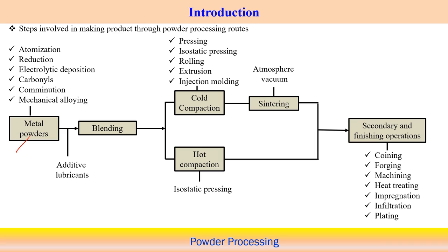Once the metal powder is produced, we can add an additive lubricant along with the powder, and then blending is the next step. After blending with the required lubricants, the powder can be compacted — either cold compaction or hot compaction. Cold compaction occurs at relatively low temperature and hot compaction at high temperature.